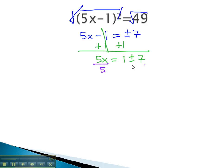Finally, get x alone by dividing both sides by 5, to get x equals 1 plus or minus 7 over 5.